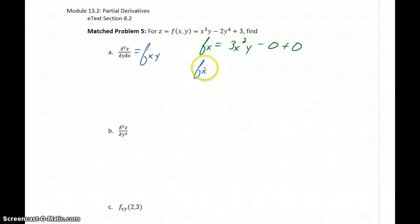And then our second derivative—we took the derivative with respect to x, now we want to take the derivative with respect to y. So that derivative just becomes 3x squared.